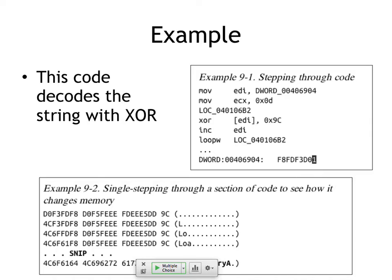For example, here's code that is decoding some string — it's got a loop which is going to loop back to that location. It's XOR encoding — simple XOR with 0x9C. In that case it's single byte XOR and you could just do it yourself in Python. But whatever it is, if you step through it, you'll just see the plain text appearing. That's awesome — once you get to an interesting spot this is especially useful.